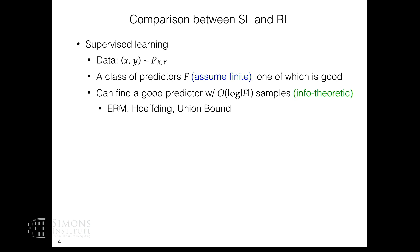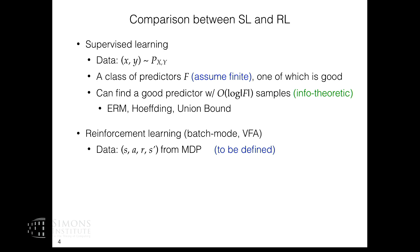This is the simplest result for supervised learning, and what I really want is an analogy of this kind of result for the RL setting — simple basic assumptions and then a clean result. Recall that we're thinking about batch mode value function approximation, where the data will look like state-action-reward-next-state tuples. I'll define how they're generated in a moment.